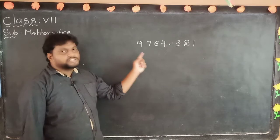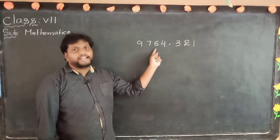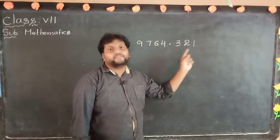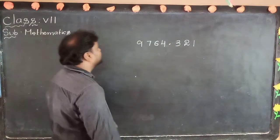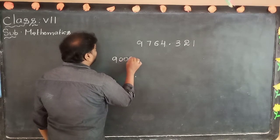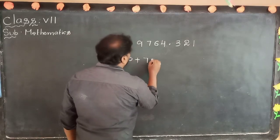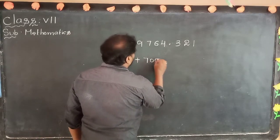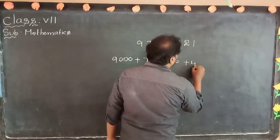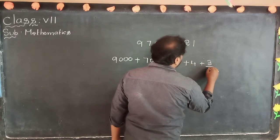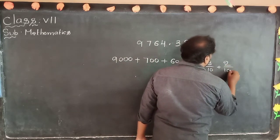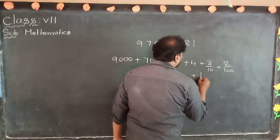Here 9 into 1000, 7 into 100, 6 into 10, 4 into 1. Then 3 by 10, 2 by 100, 1 by 1000. Now we have to write the expanded form: 9,760 plus 4 plus 3 by 10 plus 2 by 100 plus 1 by 1000.